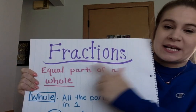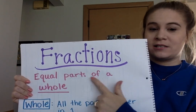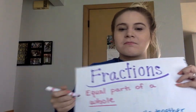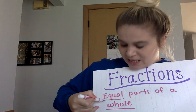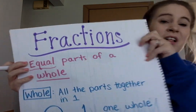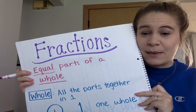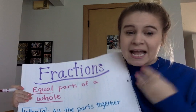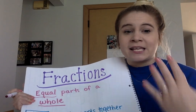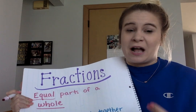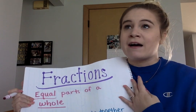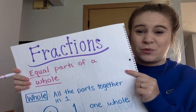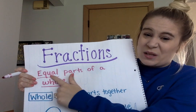Fractions are when we're showing equal parts of a whole. There are a couple of important words here. The first one is equal. If something is equal, that means it's even, or the same, or fair. So if I have two cookies and you have two cookies, we have an equal amount — it's the same. If I have one cookie and you have three cookies, that's not equal. That's not fair or the same because you have more. So when it's equal, it's the same amount.